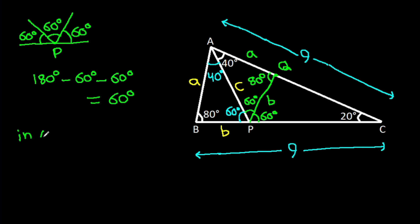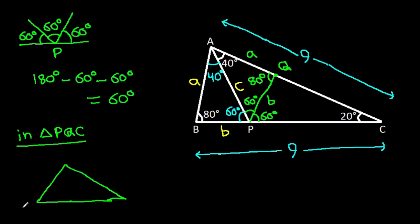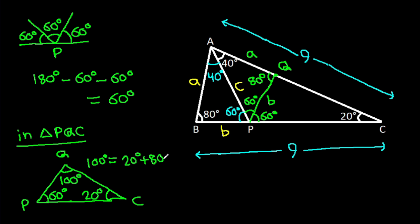So angle AQP is 60 degrees, and this angle will be 100 degrees. Since 100 degrees equals 20 degrees plus 80 degrees, from point Q, if we make QM such that this angle is 20 degrees, then this angle will be 80 degrees.